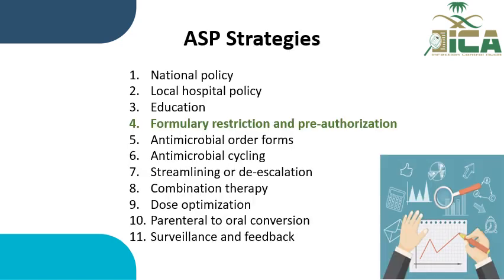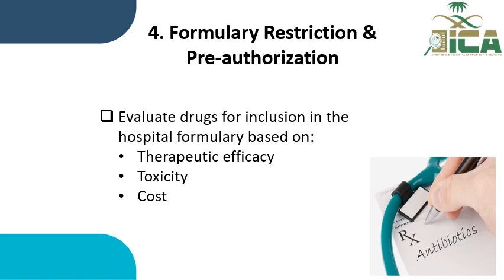The fourth strategy is formulary restriction and pre-authorization. Formulary means a list of drugs. In formulary restriction, we evaluate drugs for inclusion in the hospital formulary based on therapeutic efficacy, toxicity, and cost — these are called restricted antimicrobials. They are a certain group of broad-spectrum agents with high potential for resistance and high cost, for example amikacin or daptomycin. As per sub-element C3.2 in the ICA, the restricted antibiotic policy must be available and developed and followed up by pharmacy and infection control.